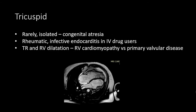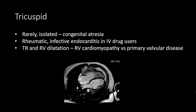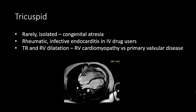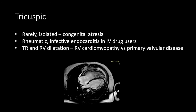Tricuspid valve disease is rarely isolated, usually seen with other valvular heart diseases in rheumatic disease or in infective endocarditis in intravenous drug users. A common indication for cardiac MRI is to determine whether it is primary tricuspid valvular disease or RV cardiomyopathy, since the clinician needs to know if valve surgery will solve the problem. Dyskinesis or akinesis of the right ventricle with right ventricular late gadolinium enhancement favors cardiomyopathy over primary valvular disease.